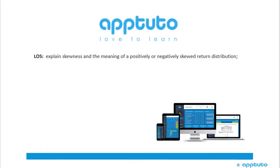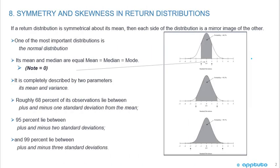This LOS explains skewness and the meaning of a positively or negatively skewed return distribution. Before we talk about skewness, let's talk about symmetry in a return distribution. If a return distribution is symmetrical about the mean — a normal distribution — then each side of the distribution is a mirror image of the other.